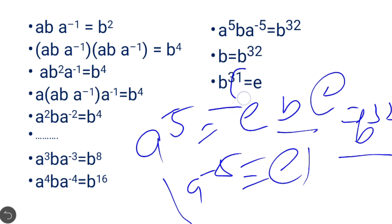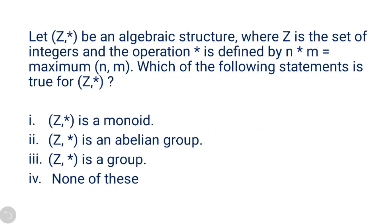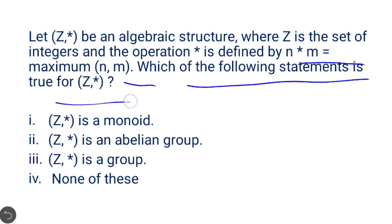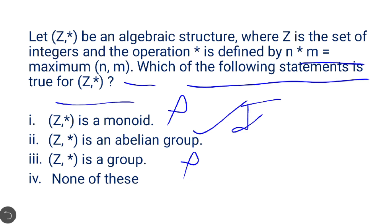Next question: let (Z, *) be an algebraic structure where Z is the set of integers and the operation * is defined as n * m = maximum of (n, m). The algebraic structure does not have any identity element since it is defined on the set of integers and there is no minimum element in the integers. Since it does not have an identity element, it is not a monoid, not a group, and not an abelian group. The correct answer is option 4.